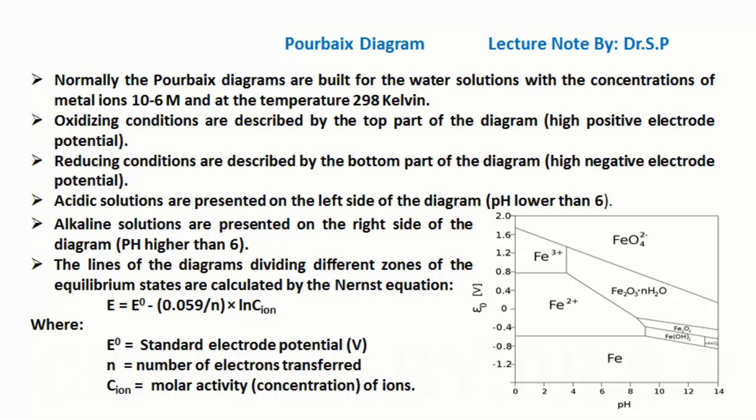The lines of the diagrams dividing different zones of the equilibrium states are calculated by the Nernst equation.